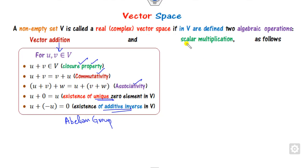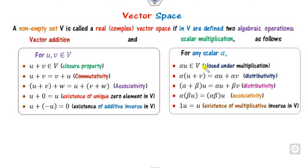On the other hand, for scalar multiplication, when you consider a scalar number alpha and multiply, you will satisfy five properties. So any set V that satisfies these ten properties in total is called a vector space.